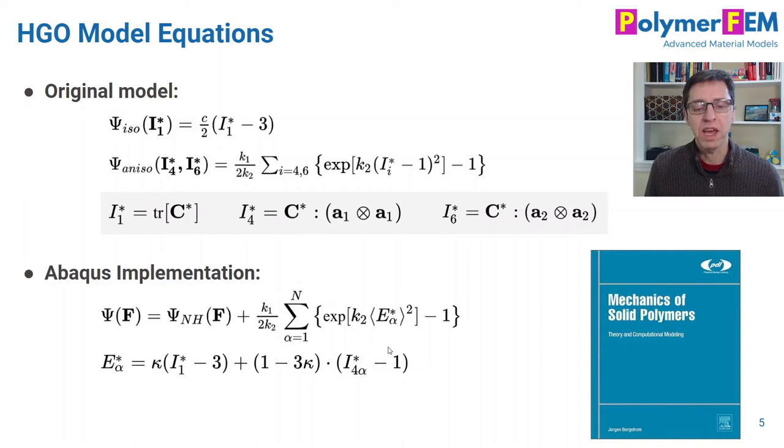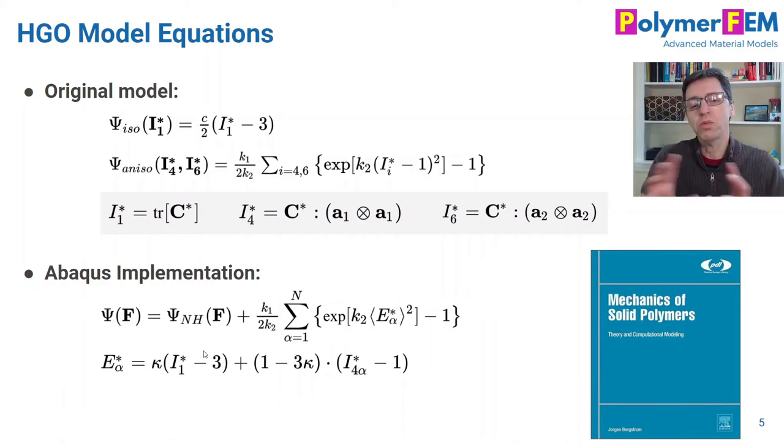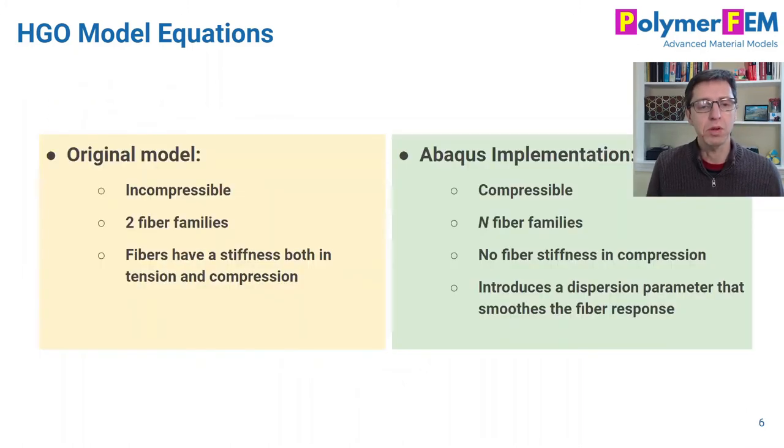But if kappa is equal to one-third, then the energy becomes fully isotropic. So the dispersion variable kappa allows you to tweak how strong the fibers contribute versus how much the matrix contributes. It's a second variable that has been introduced that way.